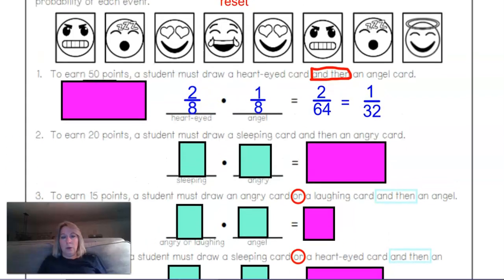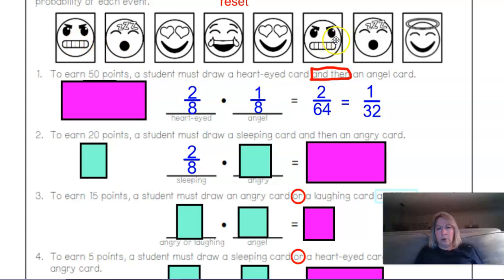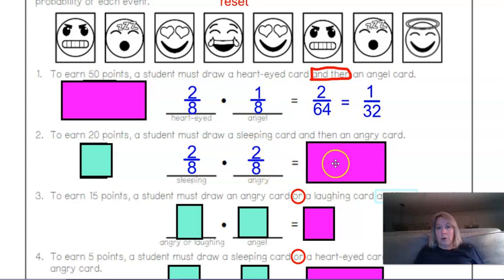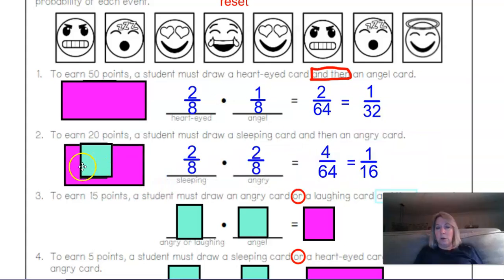To earn 20 points, a student must draw a sleeping card and then an angry card. The sleeping card: there are two of those out of the eight, so that's 2/8. And then an angry card: I see two angry cards in that pile, so two out of eight. So 2/8 times 2/8 is 4/64, and that simplifies to 1/16.